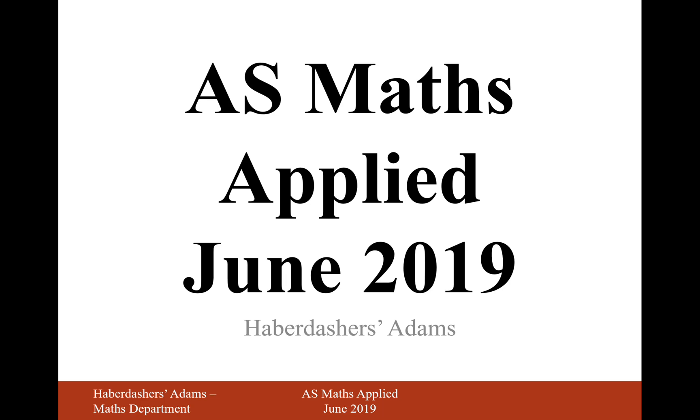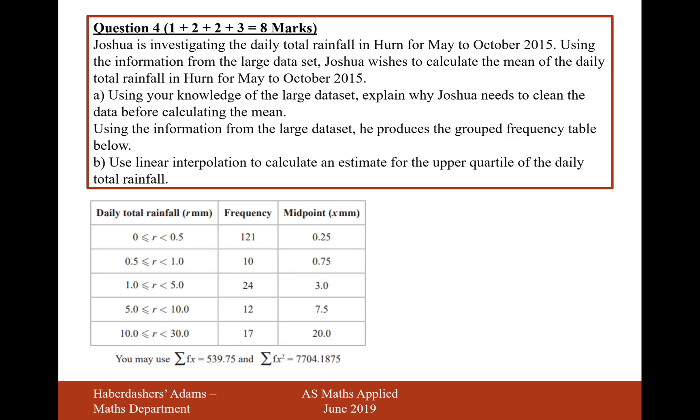Hello there, welcome to the June 2019 Applied Paper. Here we're looking at question 4. Joshua is investigating the daily total rainfall in Herne from May to October 2015. Using the information from the large data set, Joshua wishes to calculate the mean of the daily total rainfall in Herne from May to October 2015. Using your knowledge of the large data set, explain why Joshua needs to clean the data before calculating the mean.